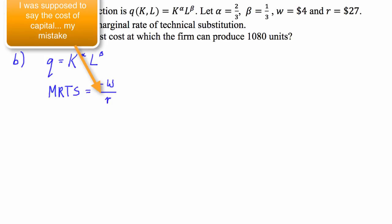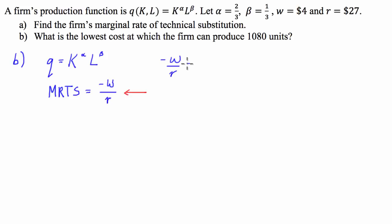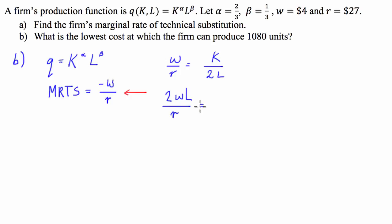We start with the cost-minimization condition and set negative W over R equal to the MRTS we found in part A: negative K over 2L. Since both sides are negative we can cancel the negatives, then rearrange to get capital in terms of labour. Moving 2L to the left-hand side gives us K equals 2WL over R.